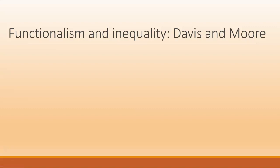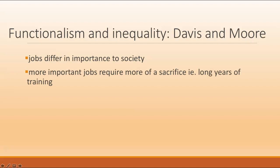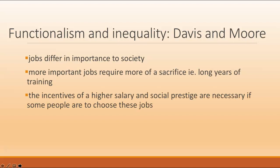We begin now with an influential take on inequality from a functionalist position, proposed by Kingsley Davis and Wilbert Moore as the Second World War ended. This position starts with the point that some jobs are more important than others because they contribute more to society. Along with that is the idea that training for more important jobs requires more of a sacrifice, both in terms of time and money.